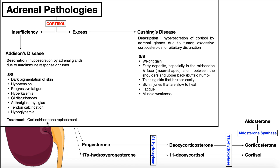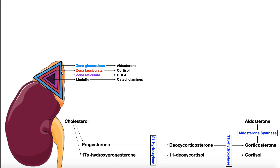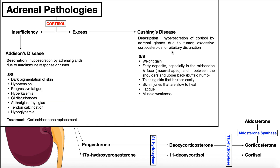The case where there's excess cortisol is Cushing's disease, sometimes called Cushing's syndrome — the C I think of as cortisol, lots and lots of C. It's a hypersecretion of cortisol by the adrenal cortex due to a tumor, excessive corticosteroids, or pituitary dysfunction. In terms of the pituitary, the anterior pituitary releases ACTH, adrenocorticotropic hormone, which goes to the zona fasciculata and triggers it to make cortisol. If there's pituitary dysfunction causing excessive release of ACTH, that also causes excessive release of cortisol.